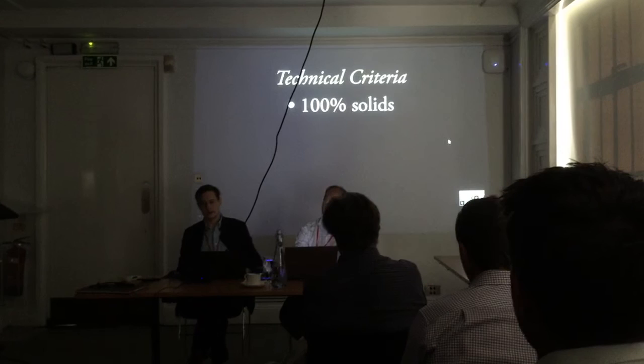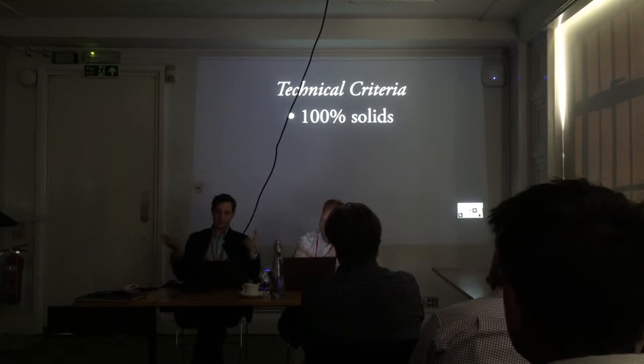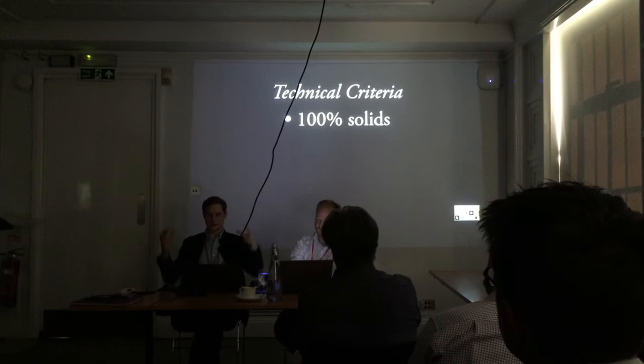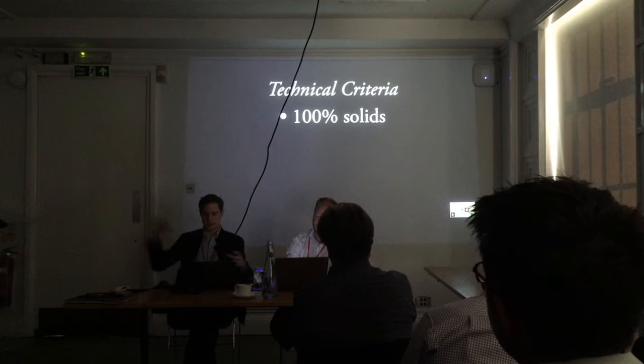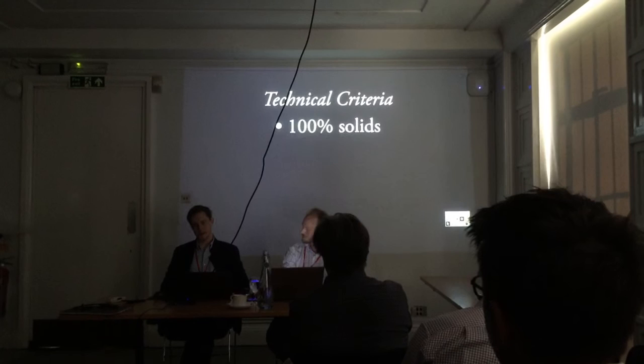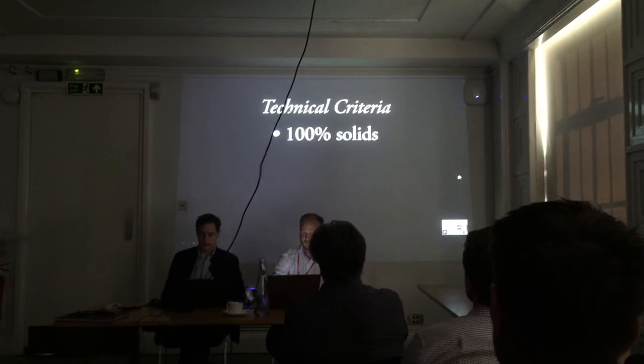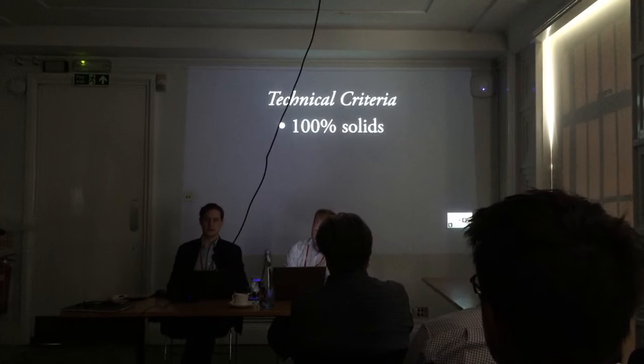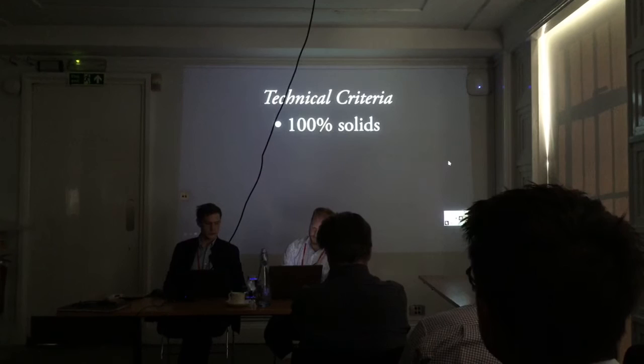Our first technical criterion is 100% solid. A solid is when you have all your geometry in one single uninterrupted shell — think of it as an eggshell: watertight, no holes, no stray lines, and no planes sticking out. This is a rigid criterion; everything we model is 100% solid. You can check by clicking on a group or component and looking at the Entity Info window — it will say whether it's solid or not.